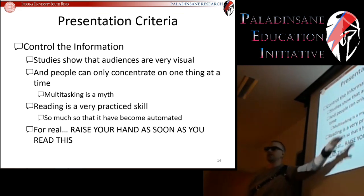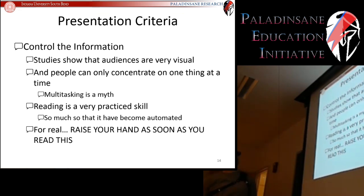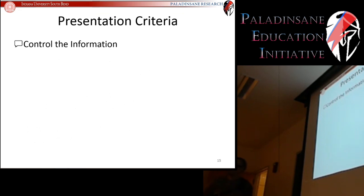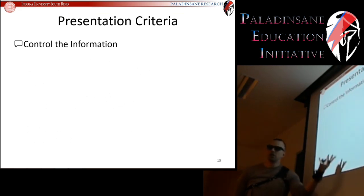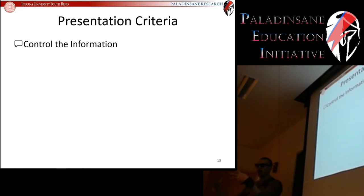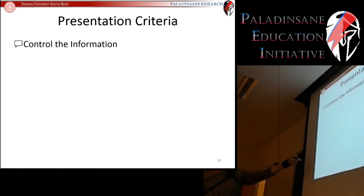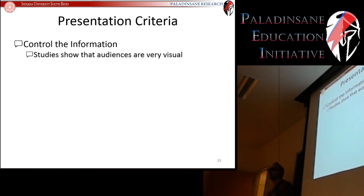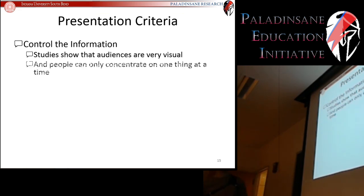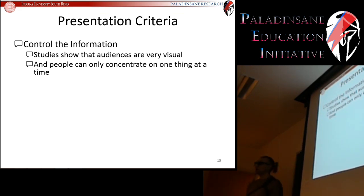A better way to do this would be to say: 'Let's talk about presentation criteria. You need to control your information.' Now I have your attention — because you've got nothing else to do except listen. Then you say: 'Studies show that people are very visual. Let me tell you about those studies.' Then: 'People can only concentrate on one thing — multitasking is a myth.' Now everybody's with you. Use the animations in presentations to control the information progressively.